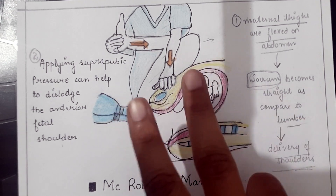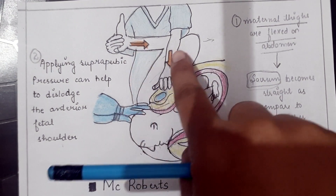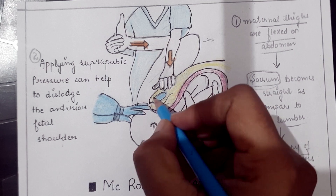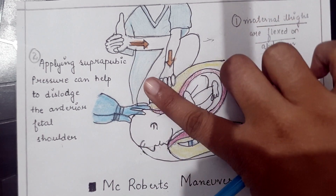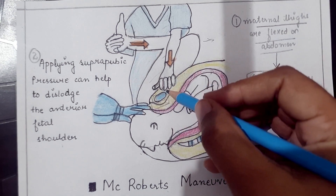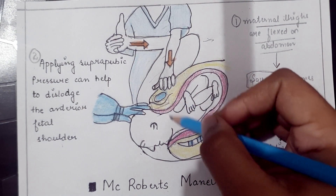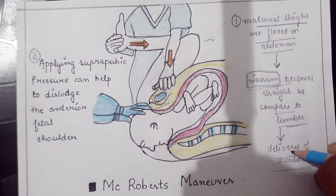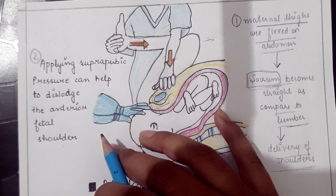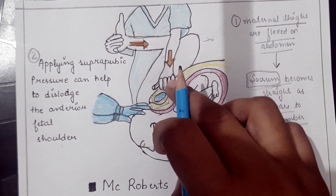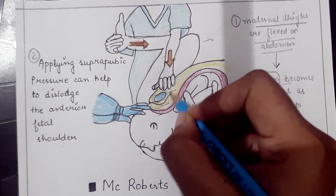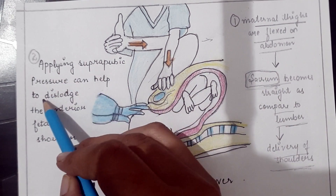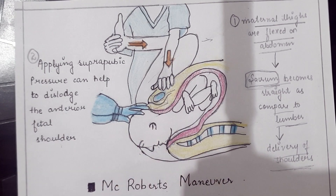McRoberts maneuver involves two actions. First, the maternal thighs are flexed onto the abdomen; when this is done, the symphysis pubis moves upward. This does not increase the diameters of the pelvis, but straightens the sacrum relative to the lumbar spine, which helps in shoulder delivery. The second action is applying suprapubic pressure to help dislodge the impacted anterior fetal shoulder.